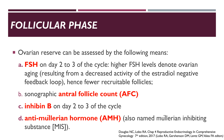Ovarian reserve can be assessed by the following means: FSH, antral follicle count, inhibin B, and anti-Müllerian hormone, to name a few. FSH is usually determined on day 2 to 3 of the cycle; higher FSH levels denote ovarian aging and hence fewer recruitable follicles — the optimum FSH we want is less than 11. We can also do a sonographic antral follicle count, or AFC, and request inhibin B or anti-Müllerian hormone, or AMH, on day 2 to 3 of the cycle.